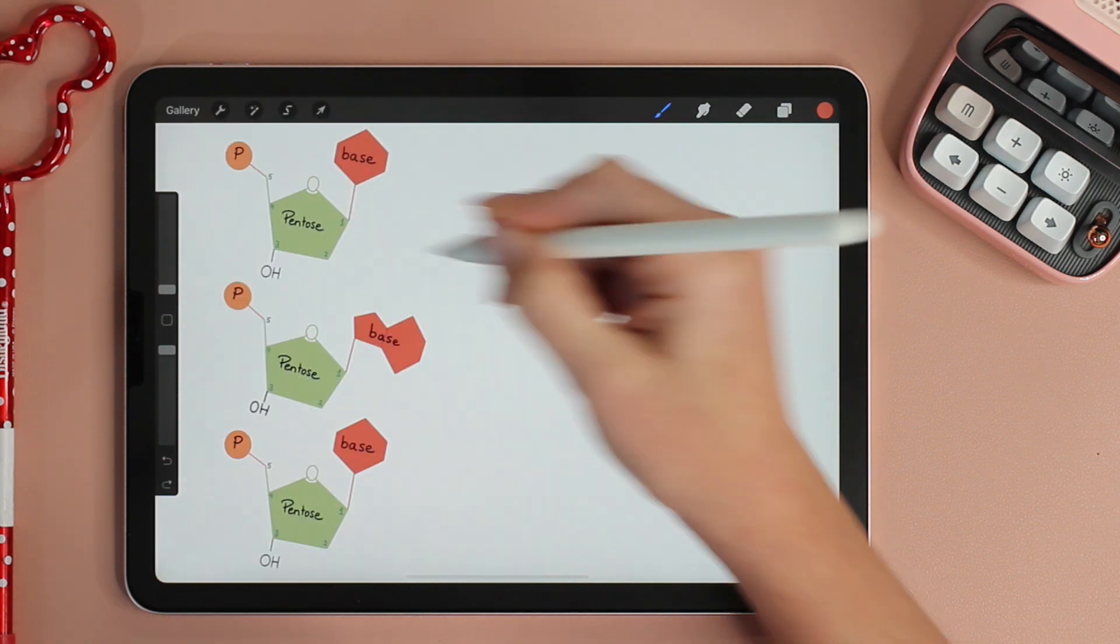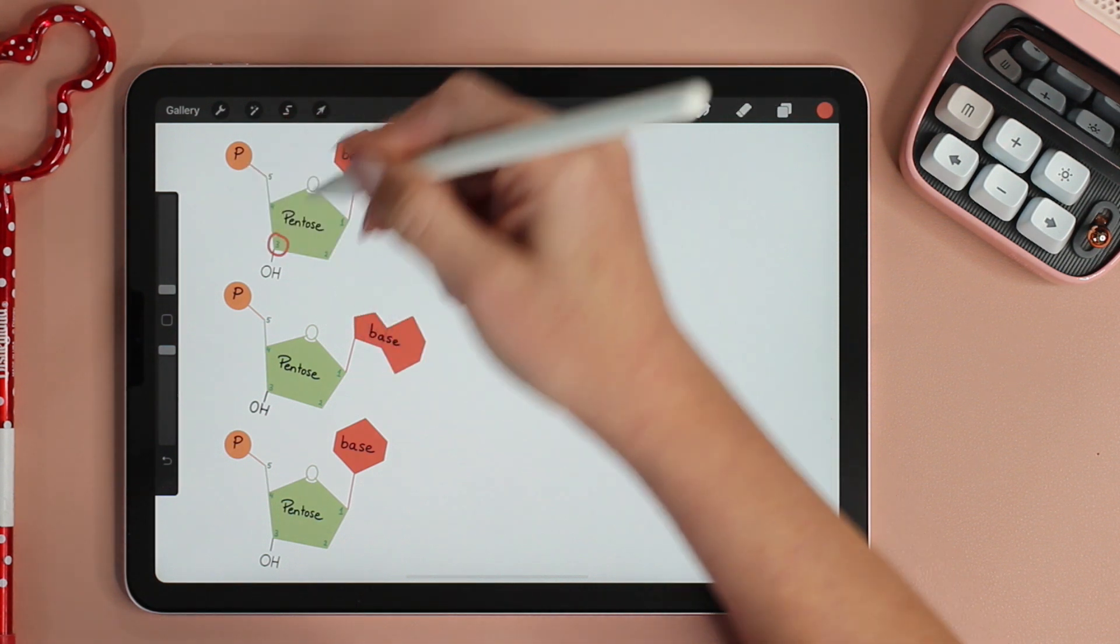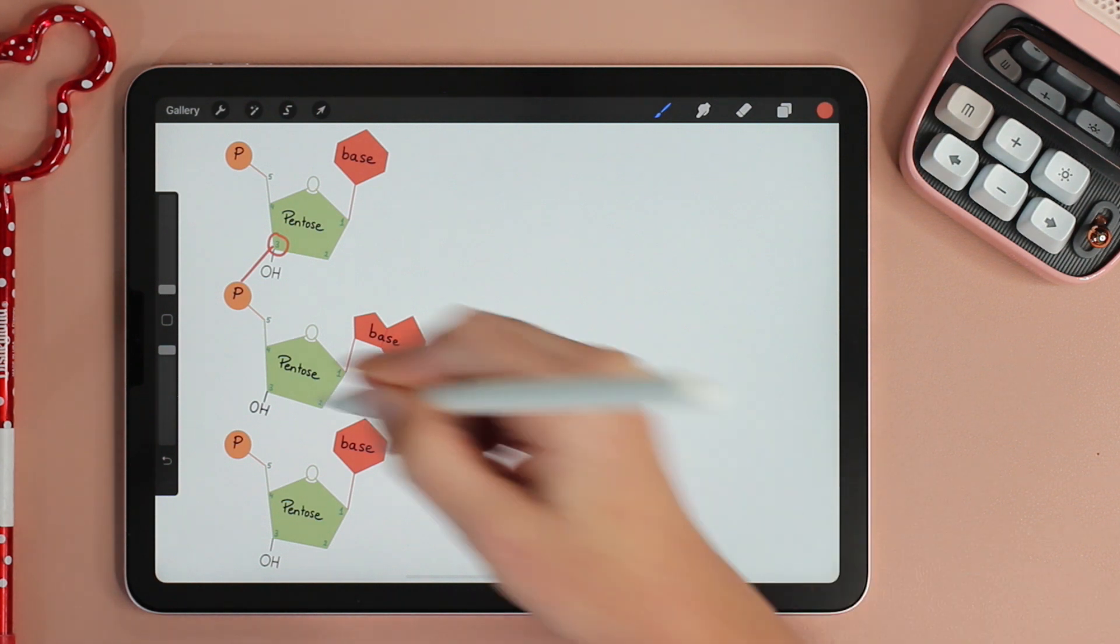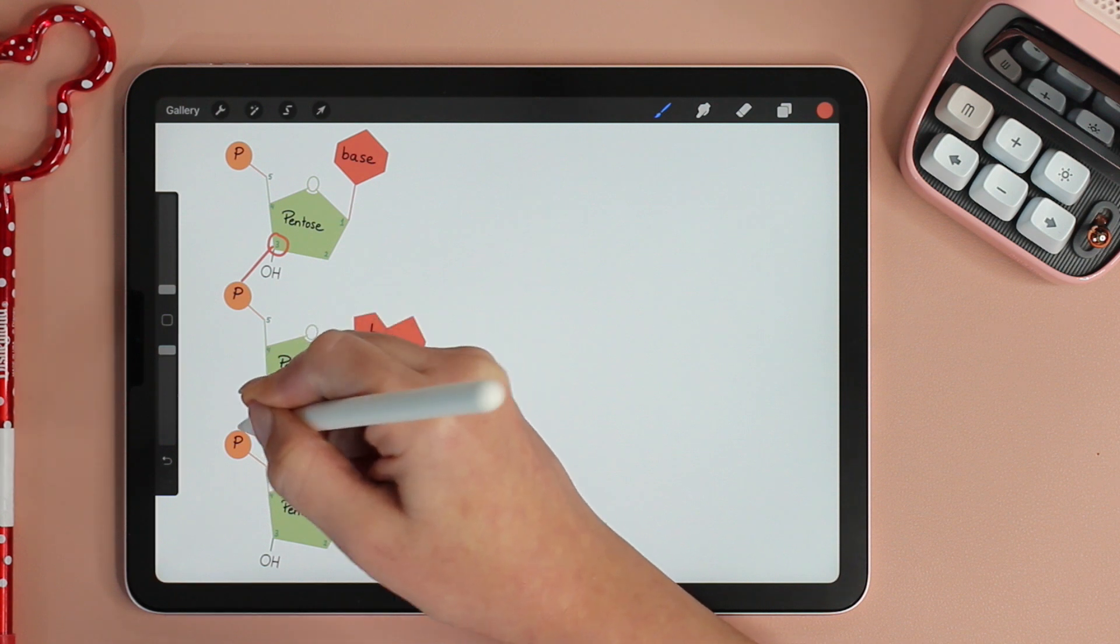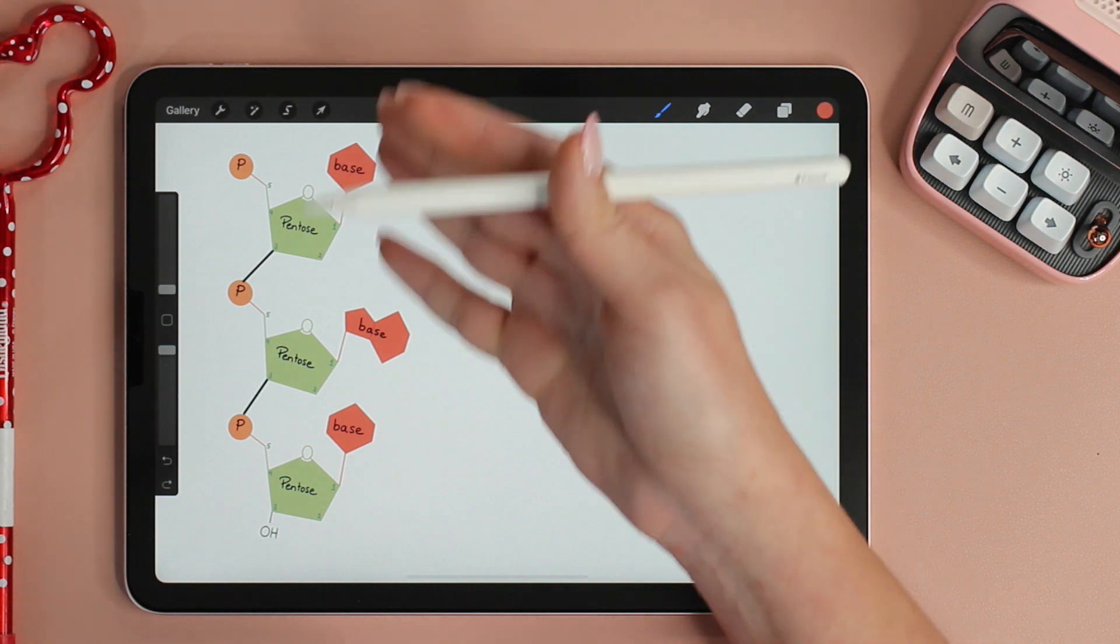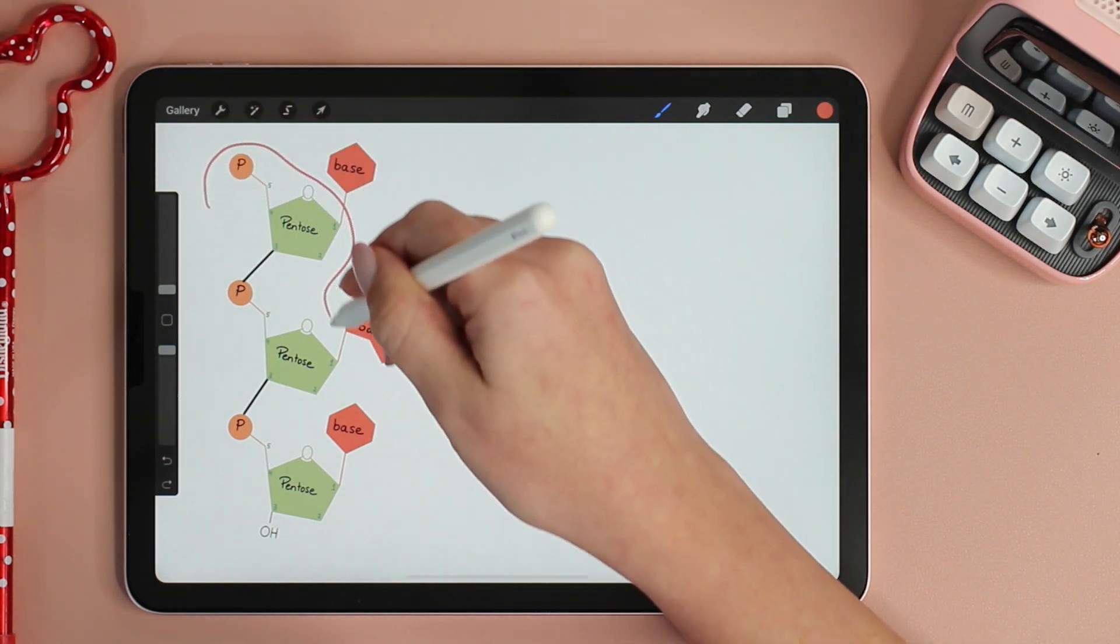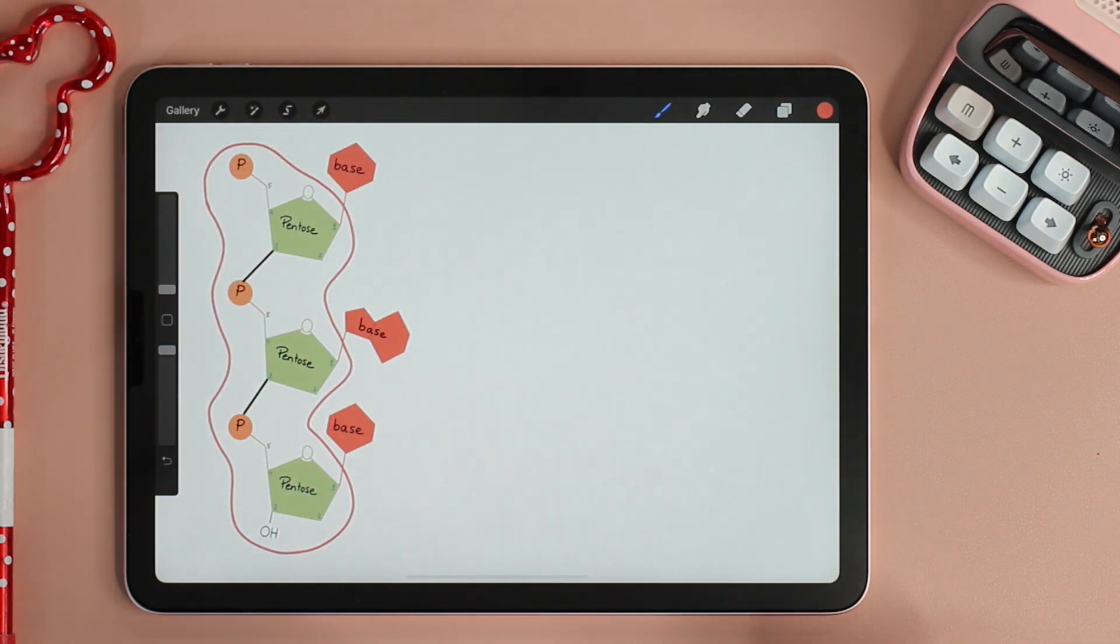Let's recap what I just said. Carbon number three of one nucleotide will bind to the phosphate of the next until we get our polynucleotide. And this is how our phosphate sugar backbone of the nucleic acid is formed.